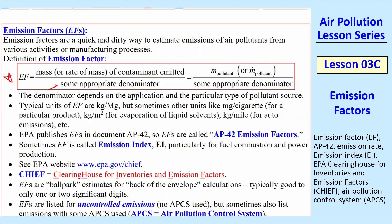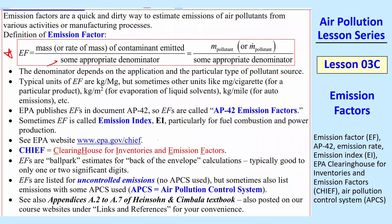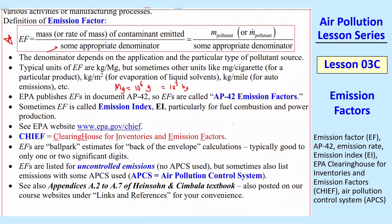The emission factor EF is the mass — or sometimes the rate of mass — of contaminant emitted divided by some appropriate denominator. That denominator depends on the application and the particular type of pollutant source. Typical units are kilogram per megagram, where a megagram is 10^6 grams or 10^3 kilograms. You're often creating large amounts of product — like iron smelting or copper smelting — so there are megagrams of product but only kilograms of air pollution.